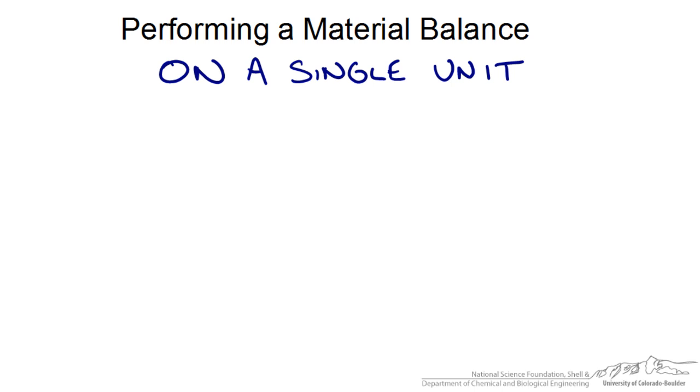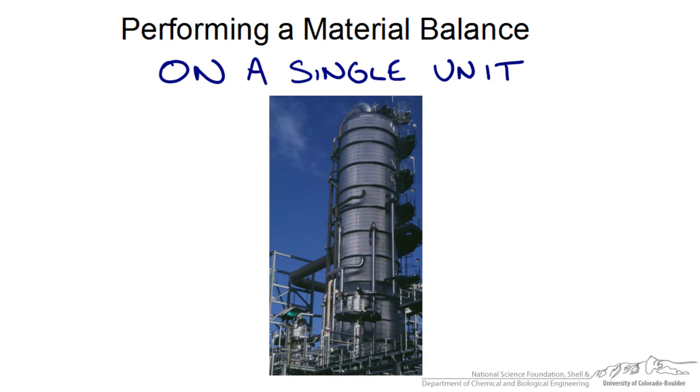In this screencast we are going to solve the material balances on a single unit and touch on the concept of using degrees of freedom analysis to help us solve our problem and why it would be important when we start getting into more complex processes. Material balances in general are extremely important to perform when designing any kind of process. You can think of this distillation tower and all the different streams coming in and out of it, and how there are more than likely multiple components. A distillation tower is used to separate those components from each other.